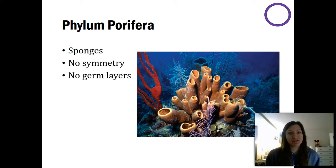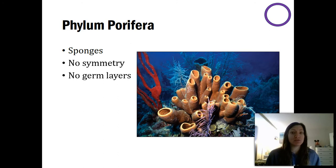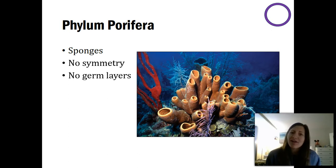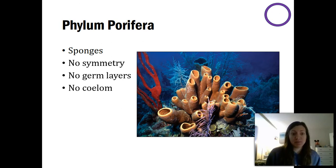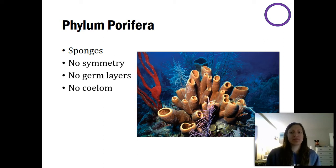Sponges also don't have germ layers — they don't have an endoderm or ectoderm. We don't classify them as a triploblast or diploblast at all. Because they don't have germ layers, that means they're not a triploblast. And if they're not a triploblast and have no mesoderm, you can't have a coelom. So they are truly the most primitive of our animals.